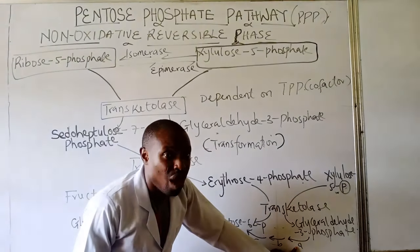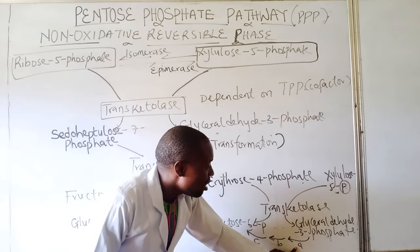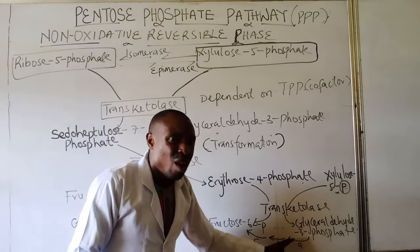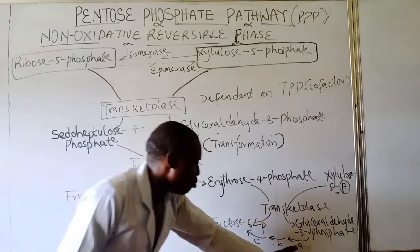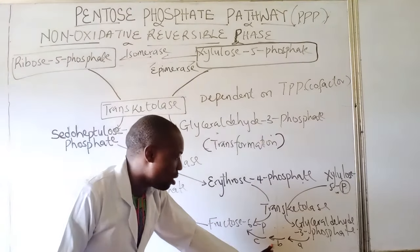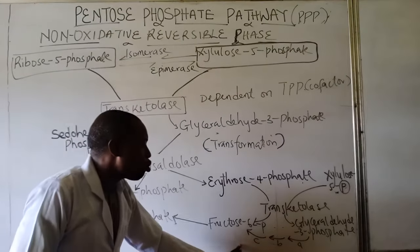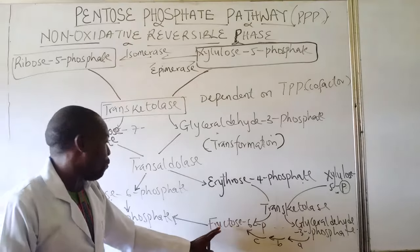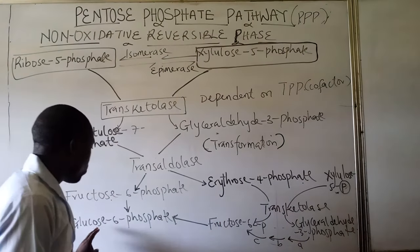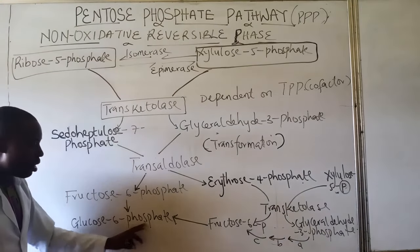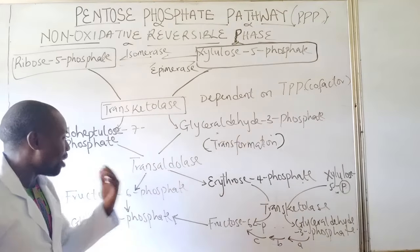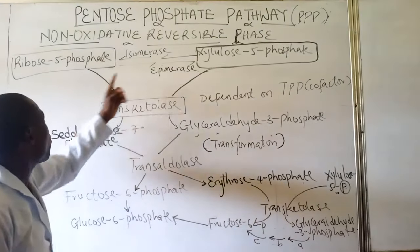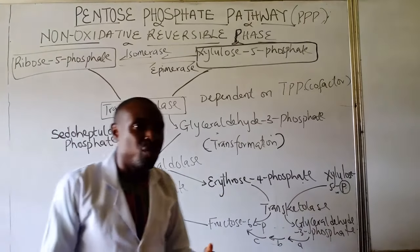The glyceraldehyde-3-phosphate is acted on by the enzyme triose-phosphate isomerase, which moves it down to aldolase, from aldolase to fructose-1,6-bisphosphate, which we then call fructose-6-phosphate, and then to glucose-6-phosphate. In turn, the pathway continues and leads again to another cycle of what we call ribose-5-phosphate.